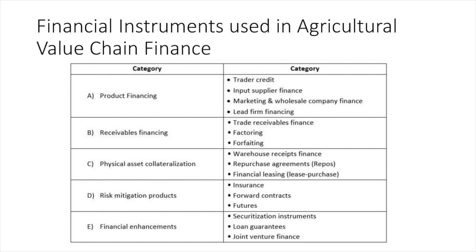These are the financial instruments used in agricultural value chain finance. In product financing, instruments include trader credit, input supplier finance, marketing and wholesale company finance, and leading firm financing. In receivable financing, instruments used are trade receivable finance, factoring, and forfeiting. In physical asset collateralization, instruments include warehouse receipts finance, repurchase agreements, and financial leasing. In risk mitigation products, instruments include insurance, forward contracts, and futures. In financial enhancement, instruments include loan guarantees and joint venture finance.